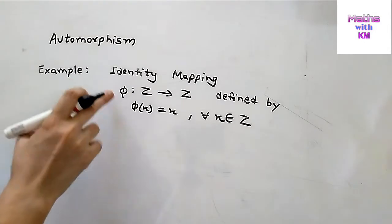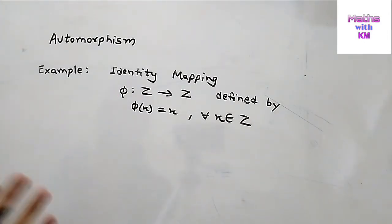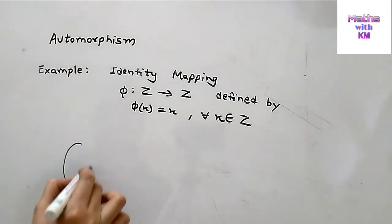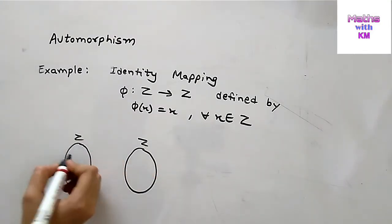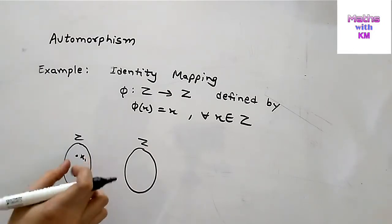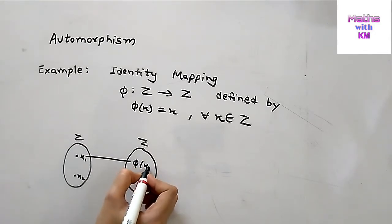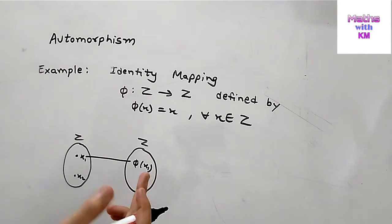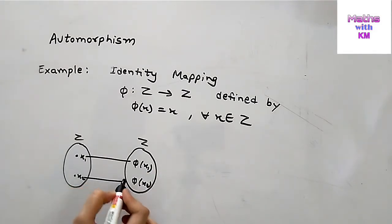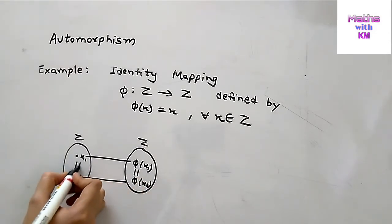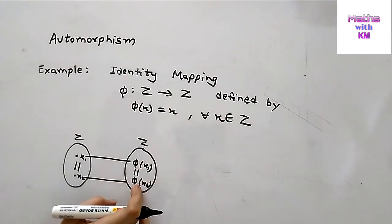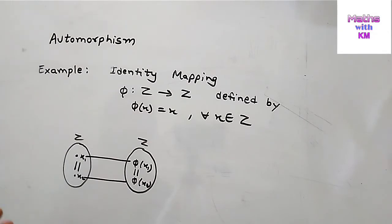This mapping is called an automorphism because all three conditions are satisfied: one-to-one, onto, and homomorphism. For one-to-one: if x1 and x2 are in the domain, the image of x1 is phi of x1 and the image of x2 is phi of x2. If these two images are the same, then the elements are also the same, so the mapping is called one-to-one.